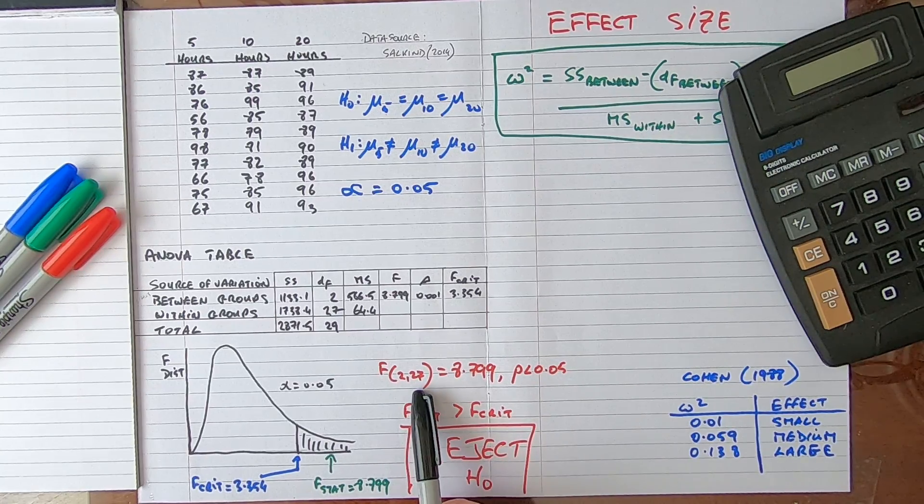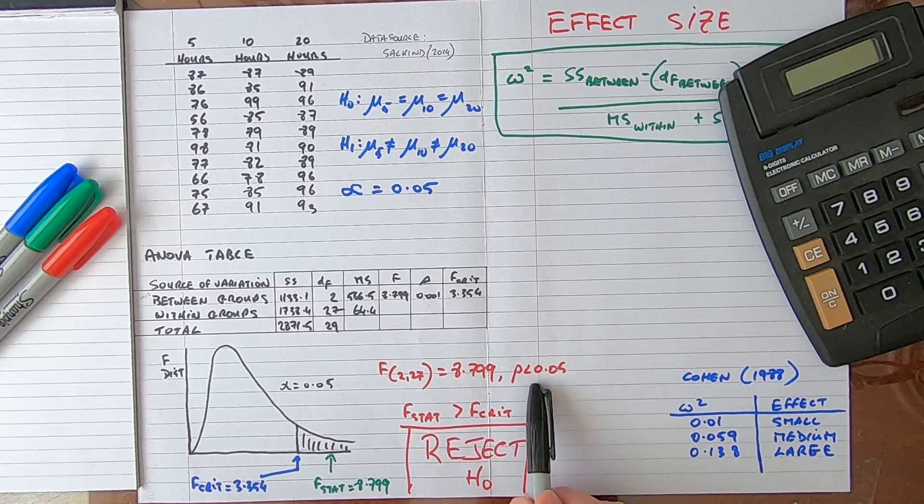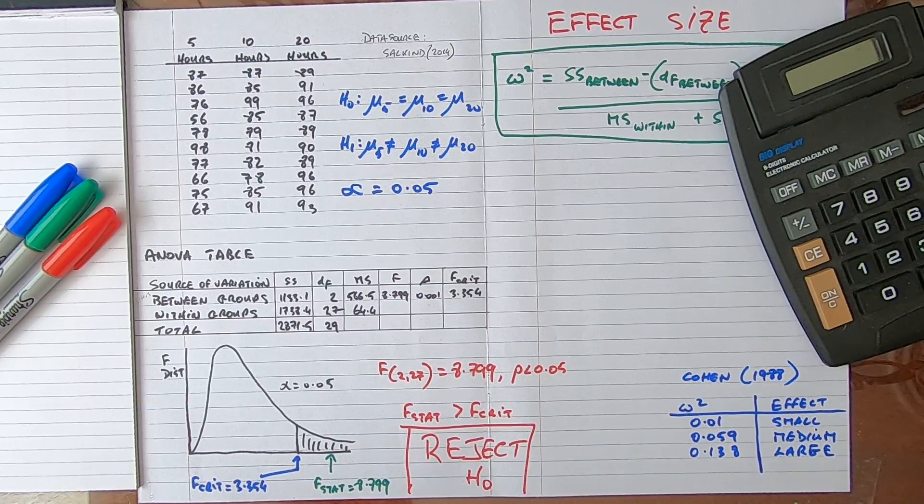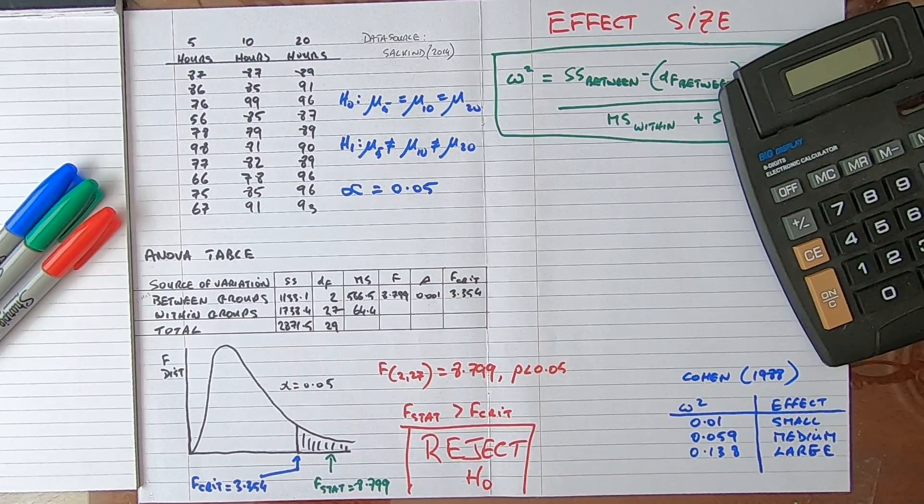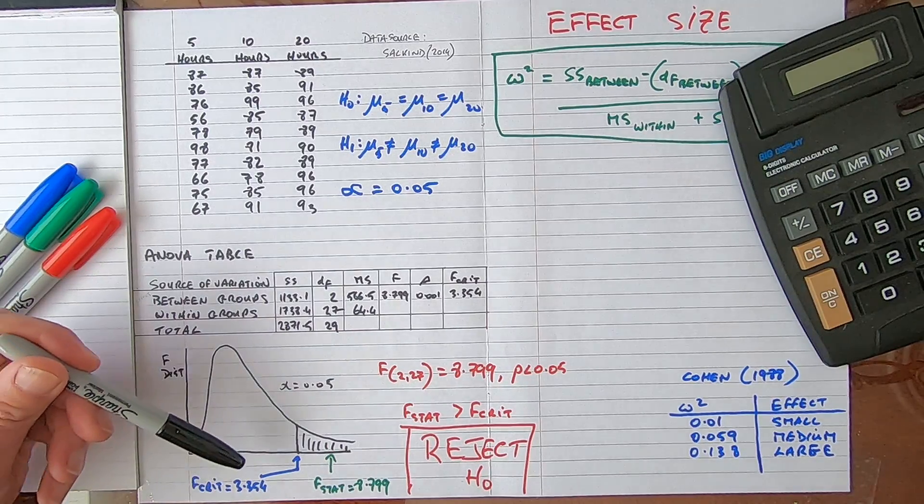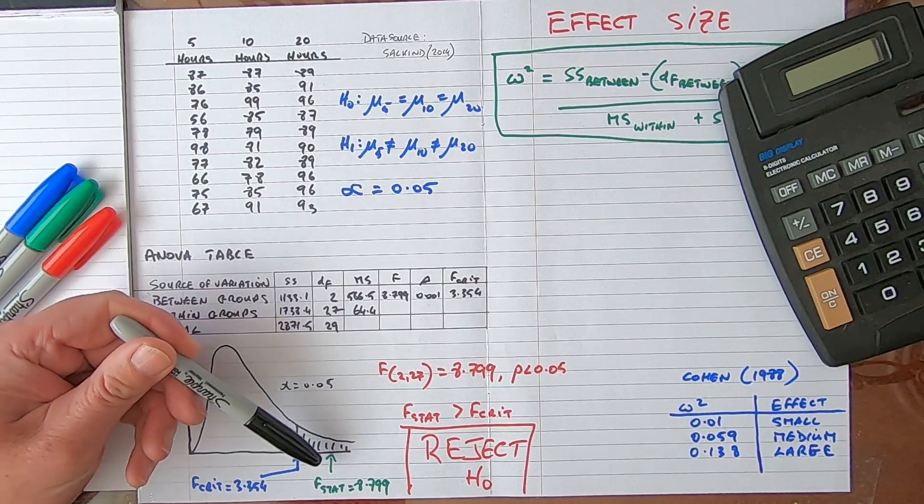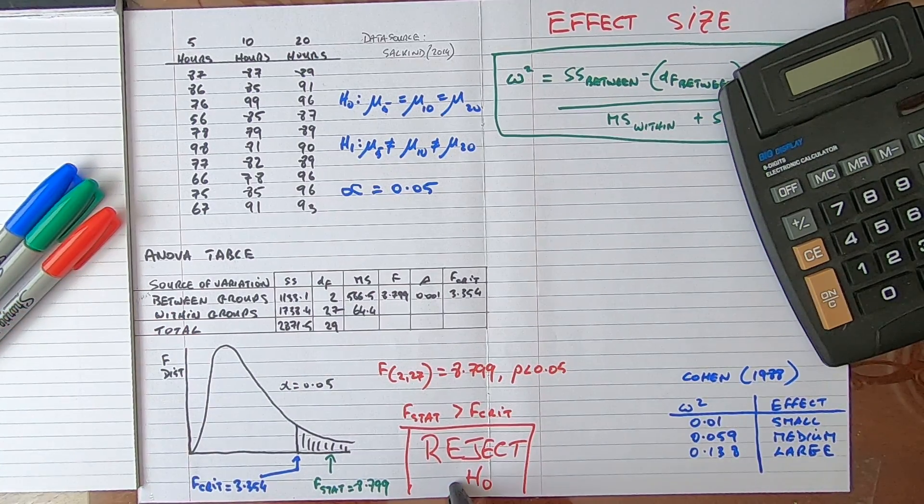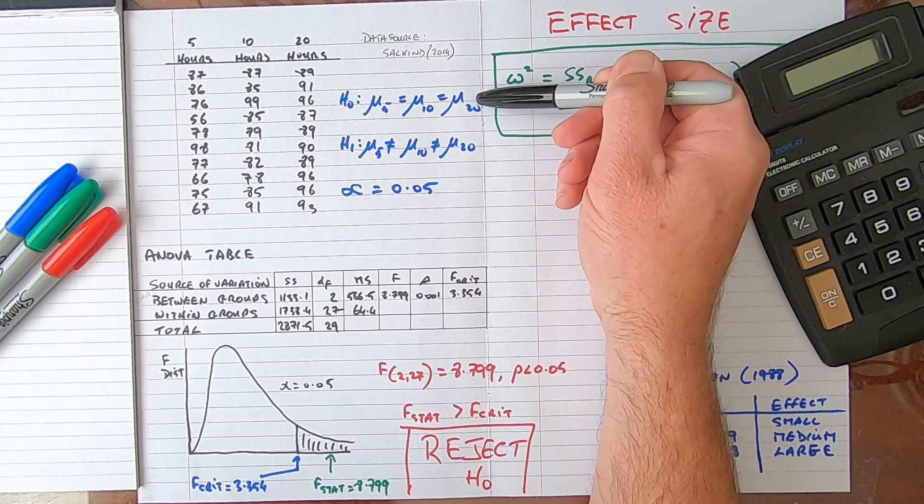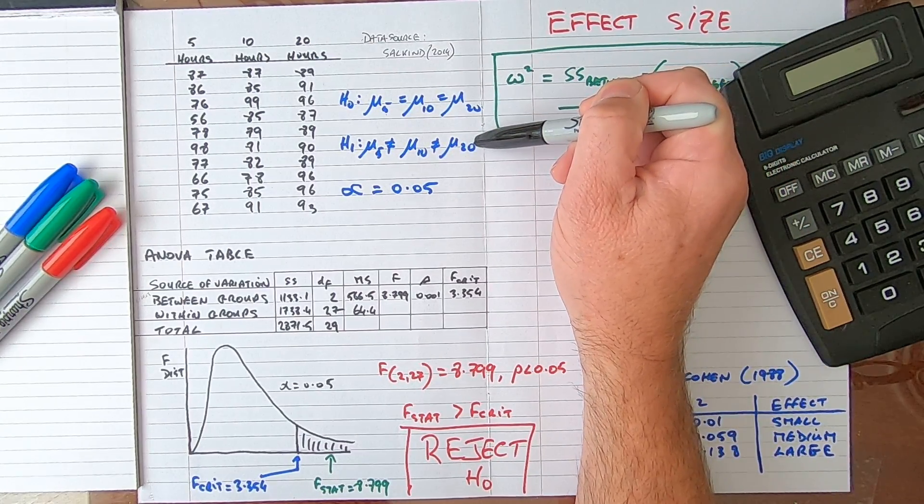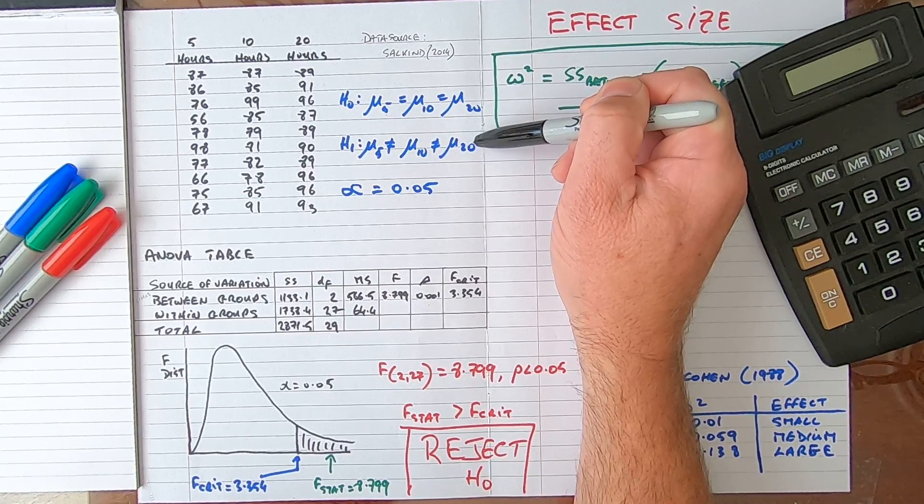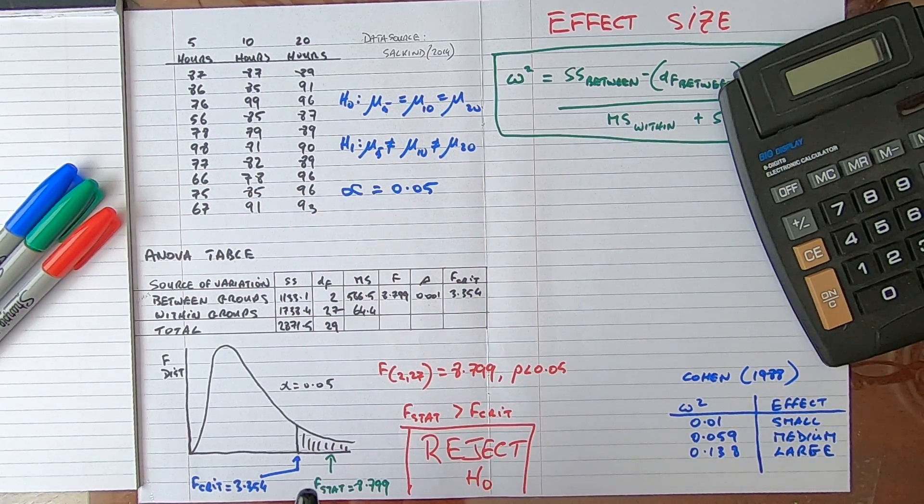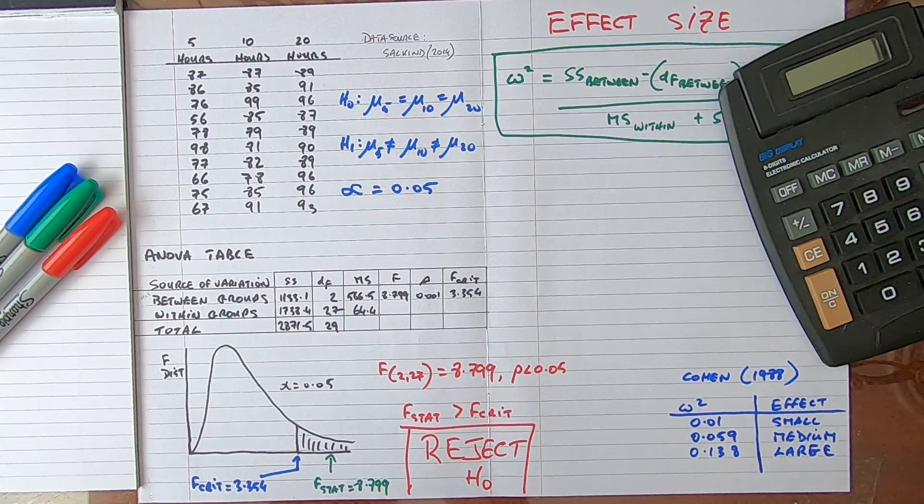Looking at our results, the F statistic for two and twenty-seven degrees of freedom is equal to 8.799, that's taken from the table, and our p-value is less than 0.05. The p-value is 0.001, so it's less. When we put this on the F distribution we can see that our critical value is 3.354 and our F stat value is 8.799. It falls into the reject region, therefore our decision is we reject the null hypothesis. We are rejecting this statement in favor of this statement here, that at least two of the population means are different. In other words, we have found an effect. The number of hours of class time has an effect on the scores of the pupils. At this stage all we know is that we have found an effect; we don't know what the size of that effect is.